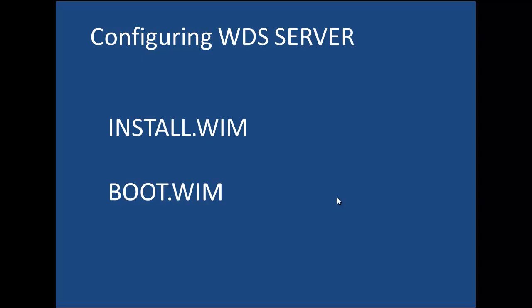The capture image is a bootable copy of the Windows pre-installation environment that allows you to copy the hard disk of the reference computer. You have to right-click on the boot.wim file within the WDS console and create that capture image, because it is going to be used to make a copy of your reference computer. We also have another type of boot image called the discover image, which is a bootable copy of the Windows pre-installation environment that allows you to copy the reference computer as a WIM file.